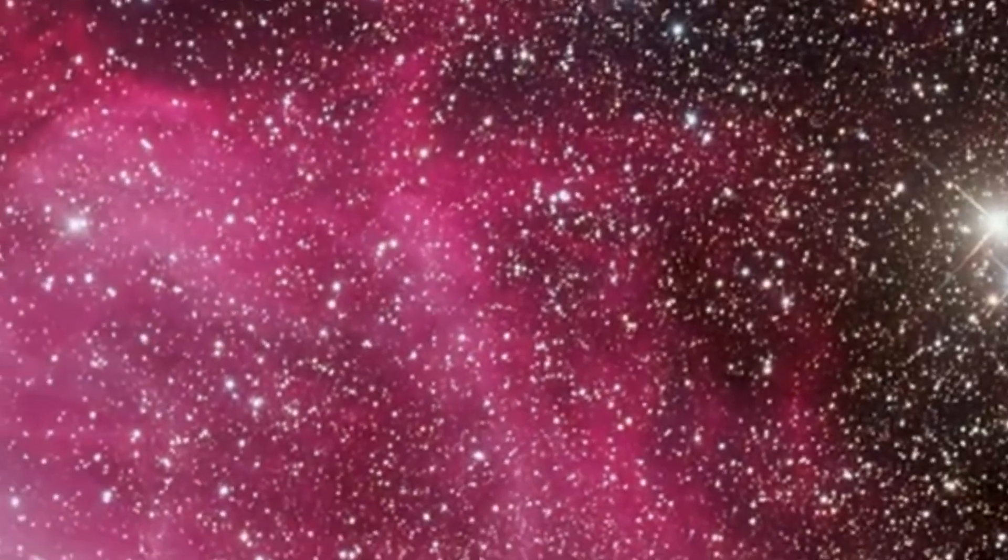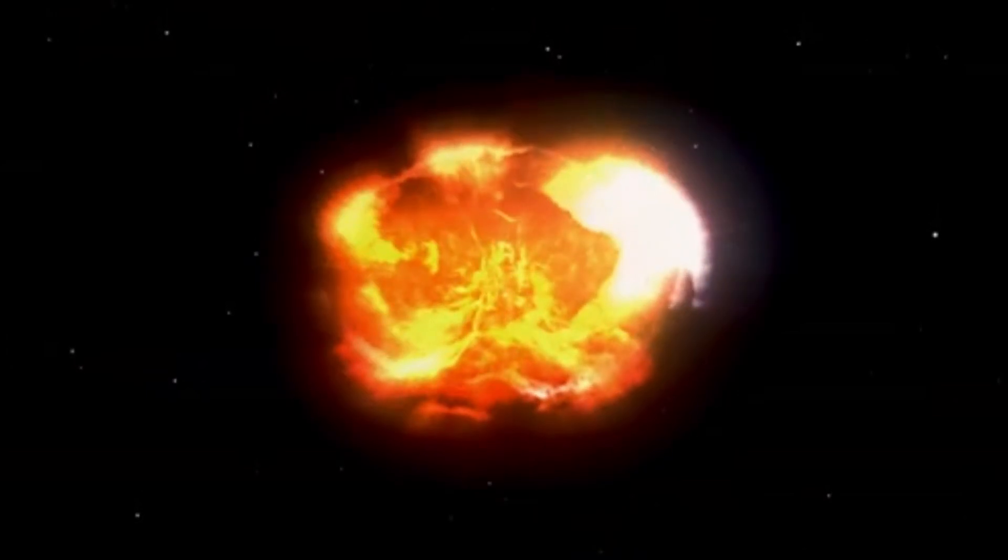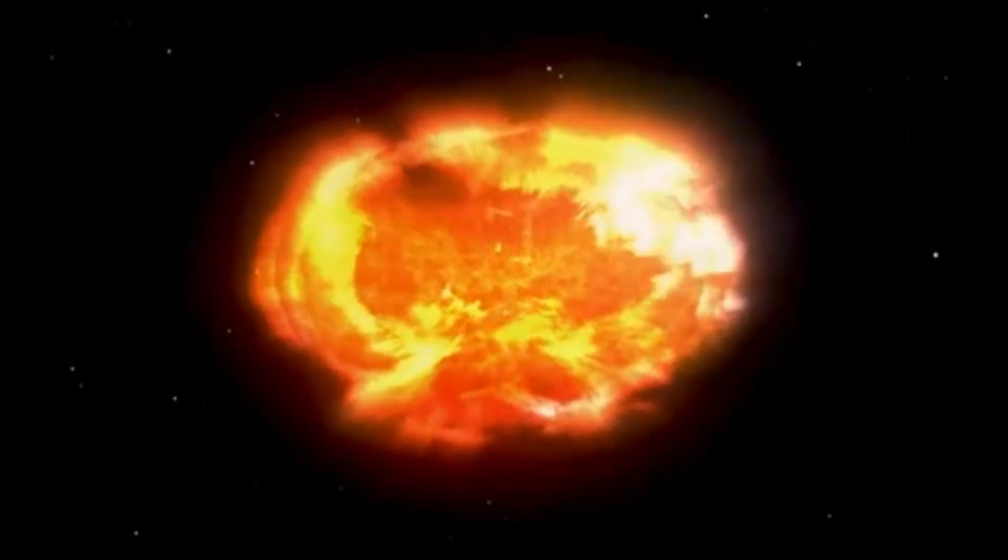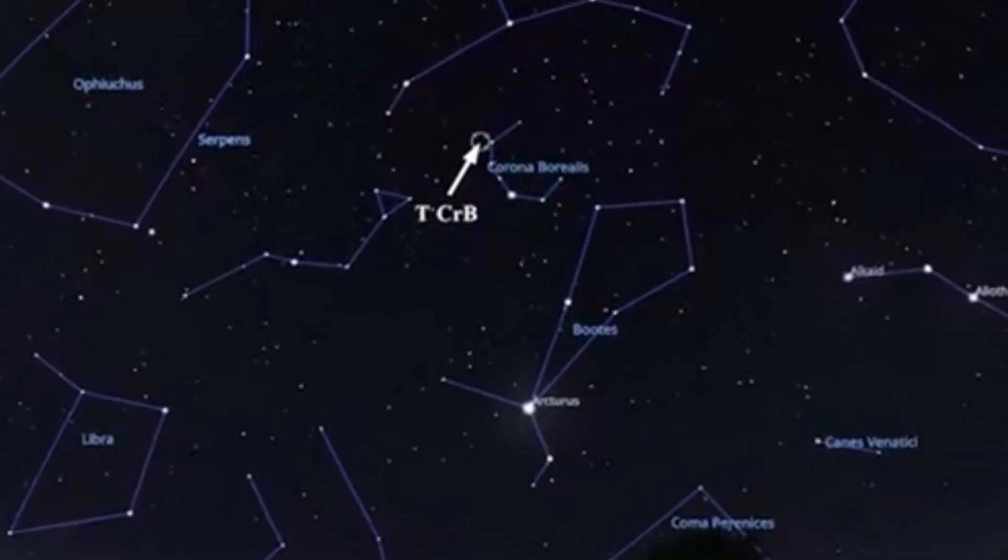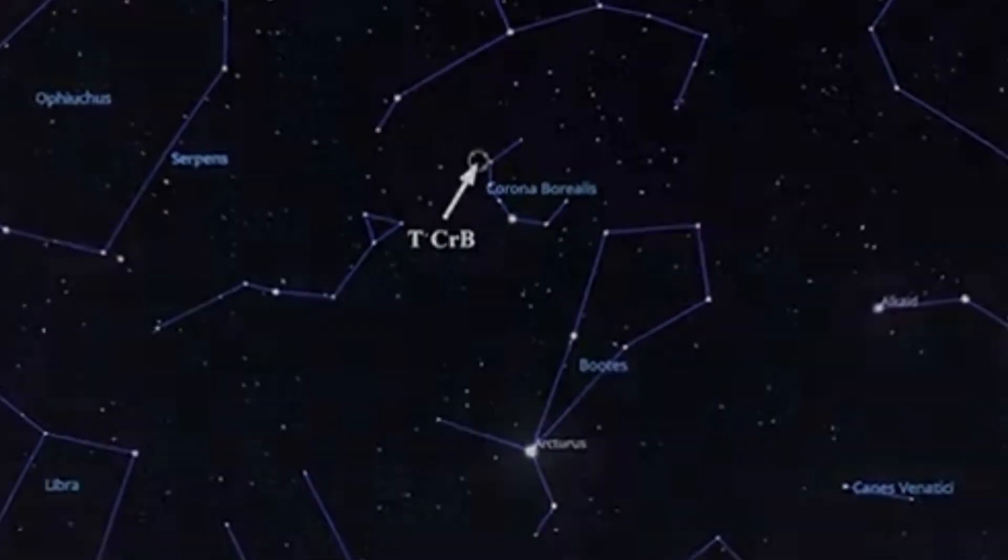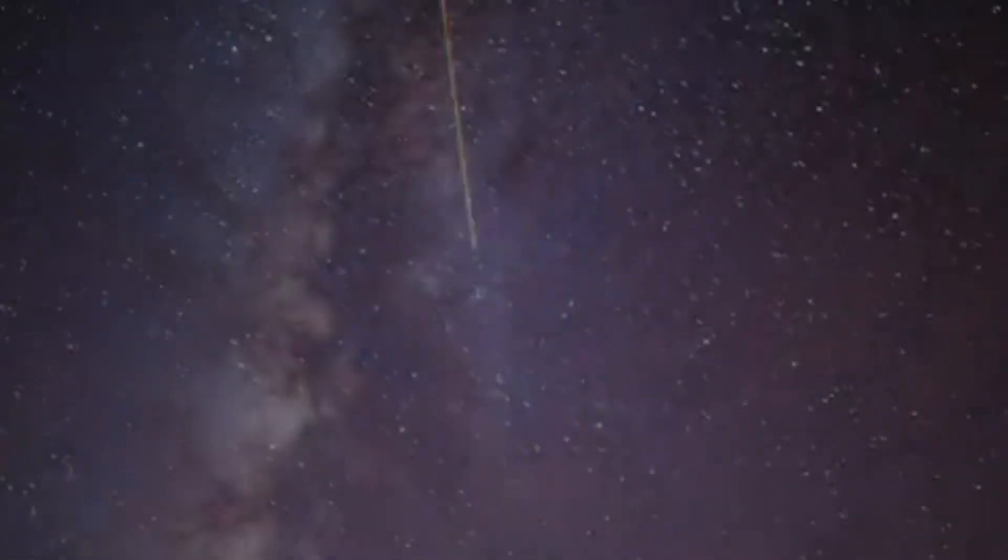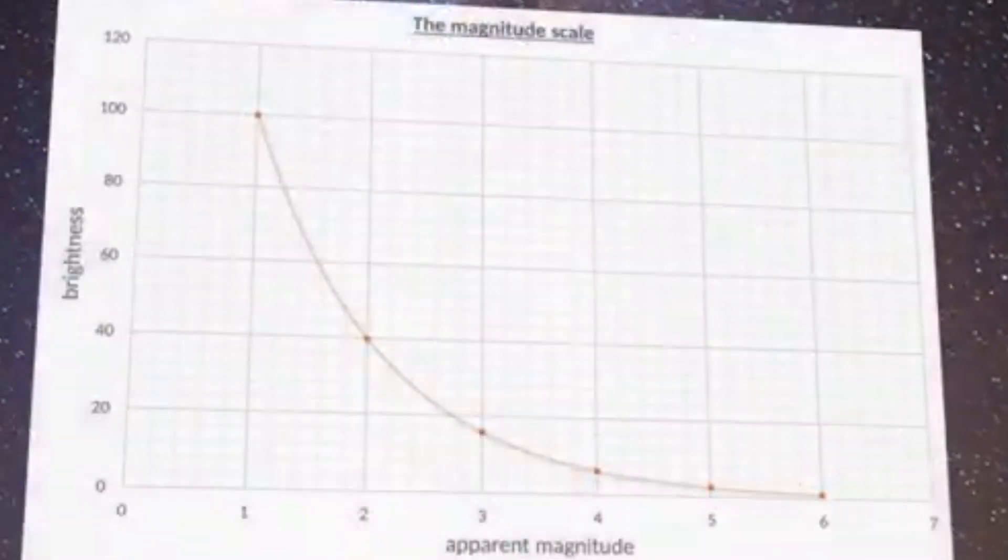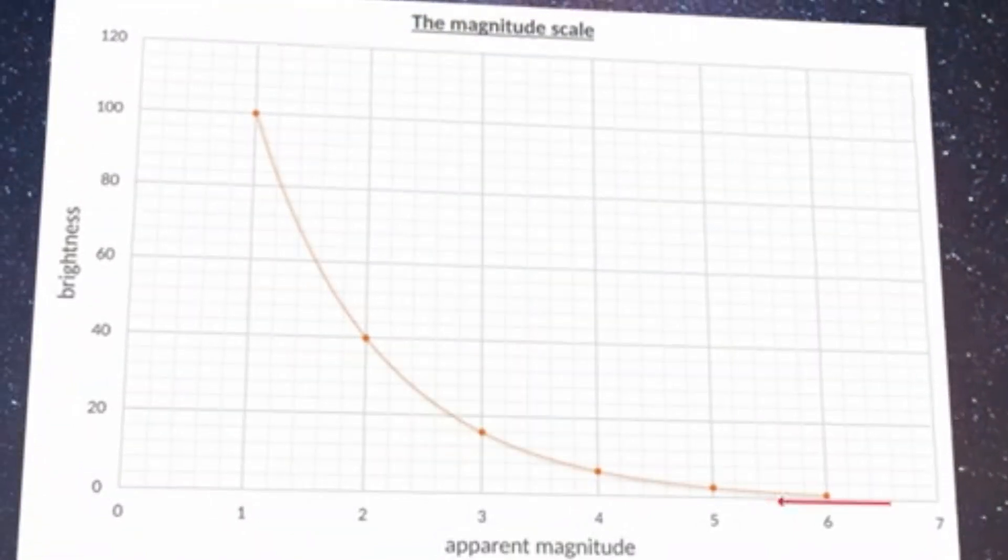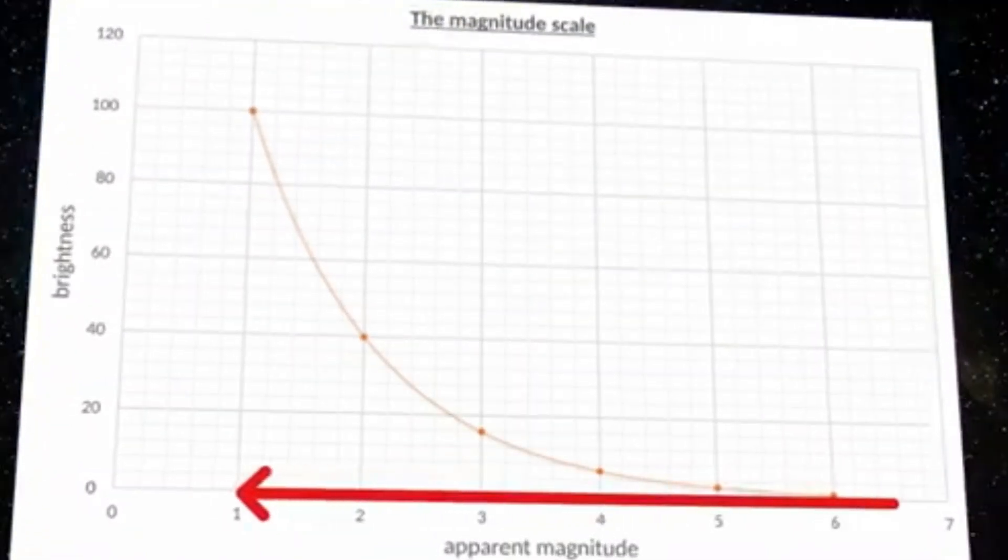While there are many stars potentially capable of ending as supernovae, one of the closest is the red supergiant Betelgeuse in the constellation Orion. This famous star, visible even to the naked eye, lies about 640 light years from Earth. Scientists believe Betelgeuse may explode in the coming tens of thousands of years—a moment in cosmic terms, but still far away for us.